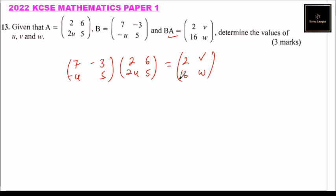So we can be able to get v and w from this. So we multiply 7 times 2 is 14, minus 3 times 2u is minus 6u. So we have 14 minus 6u. That's the first element. Then 7 times 6 is 42, minus 3 times 5 is 15, 42 minus 15, that is giving us 27.